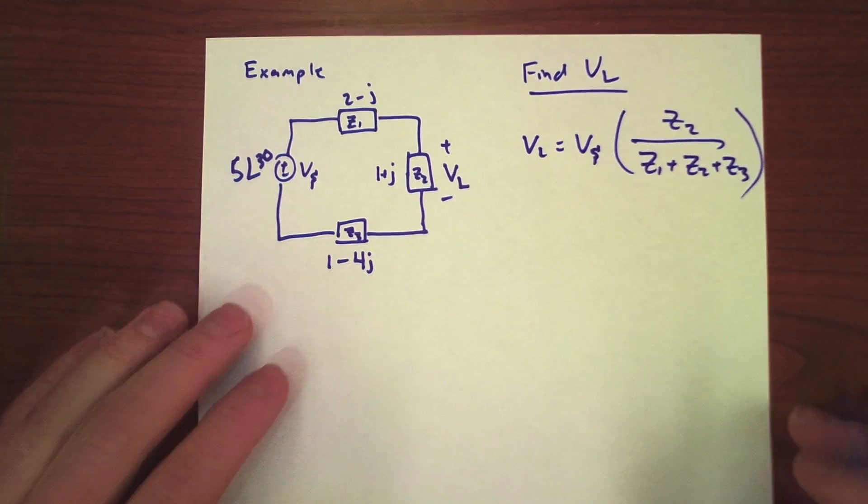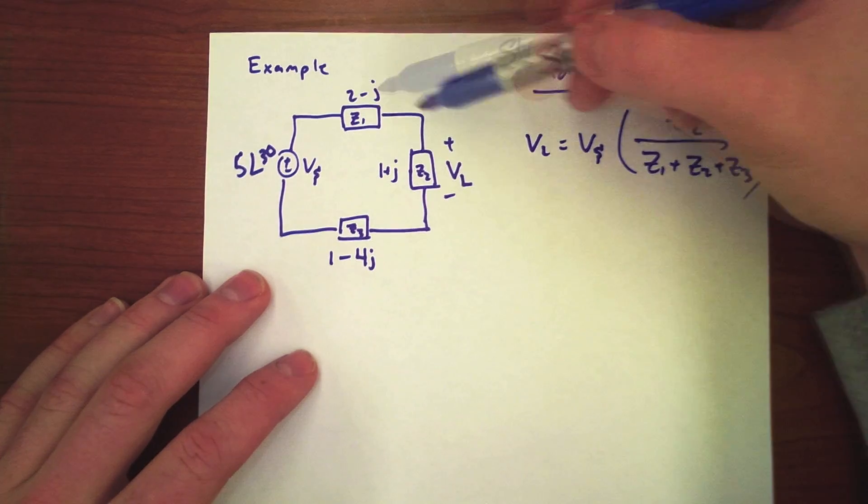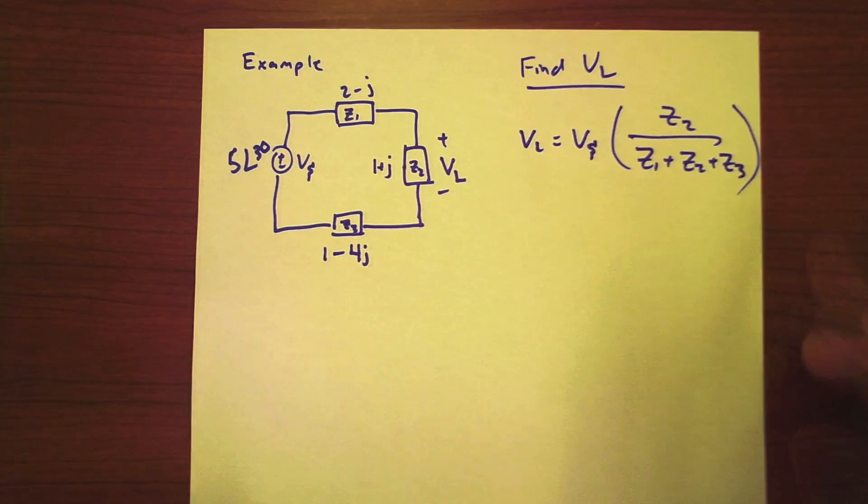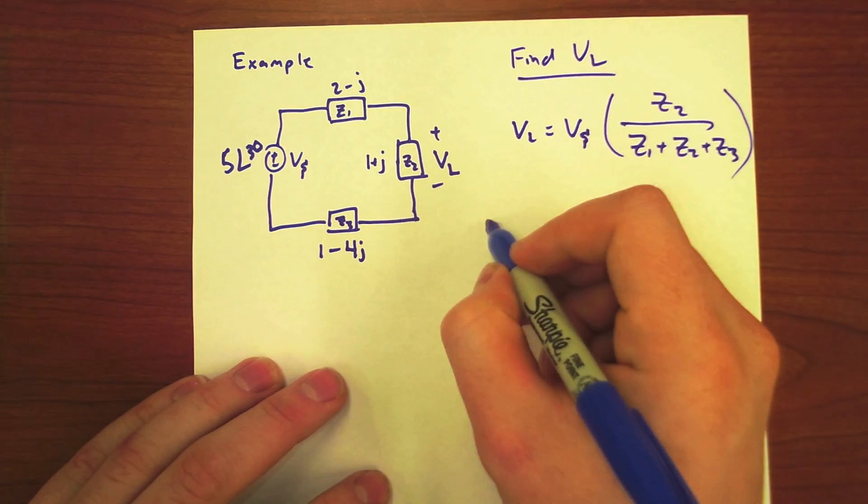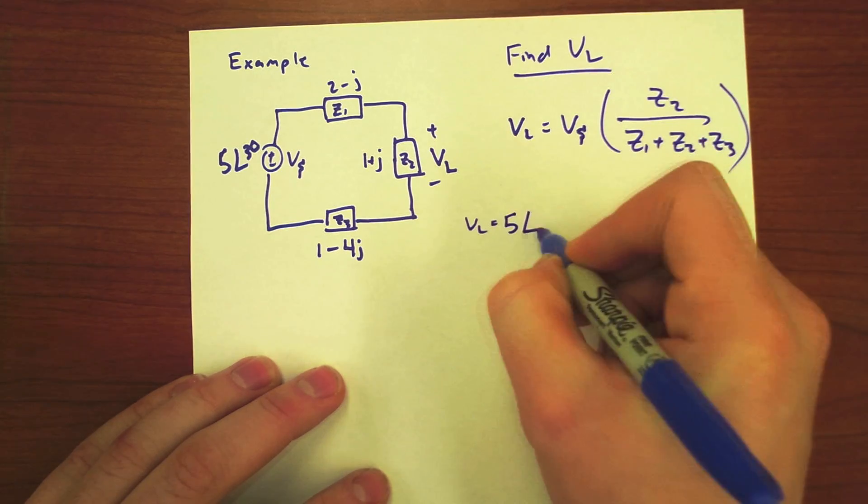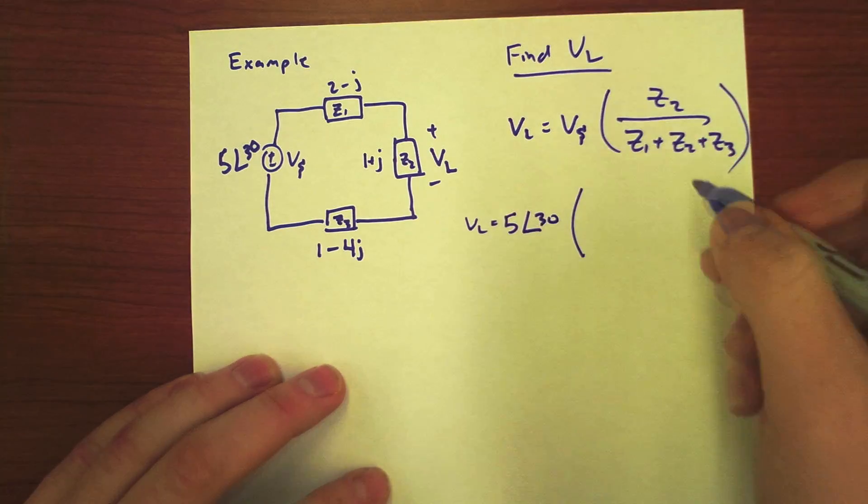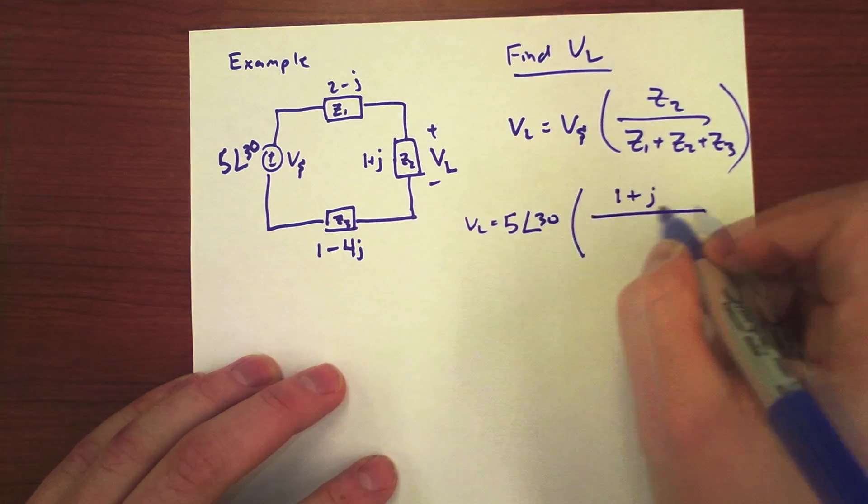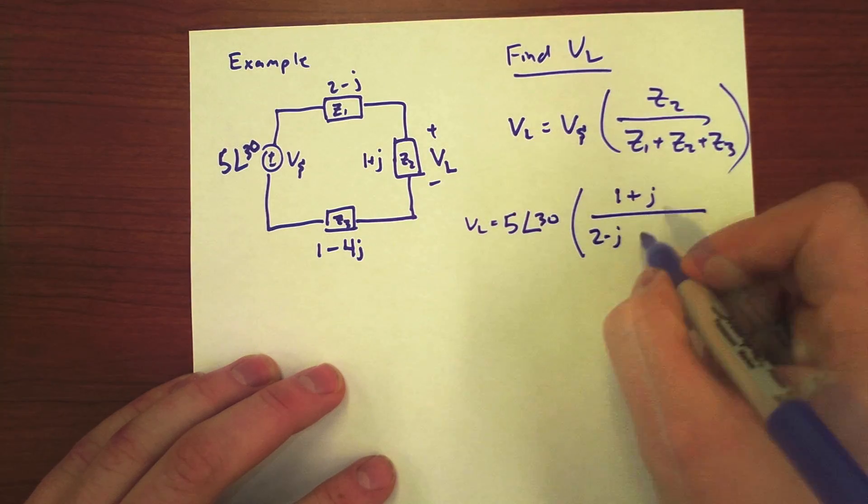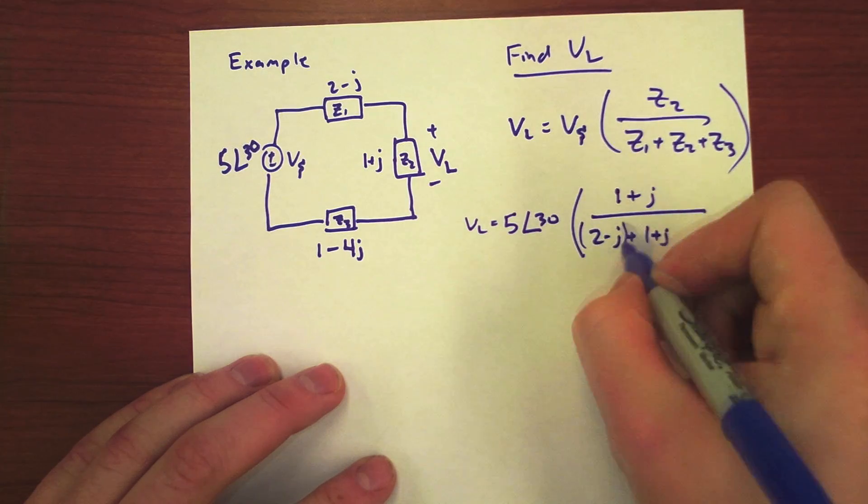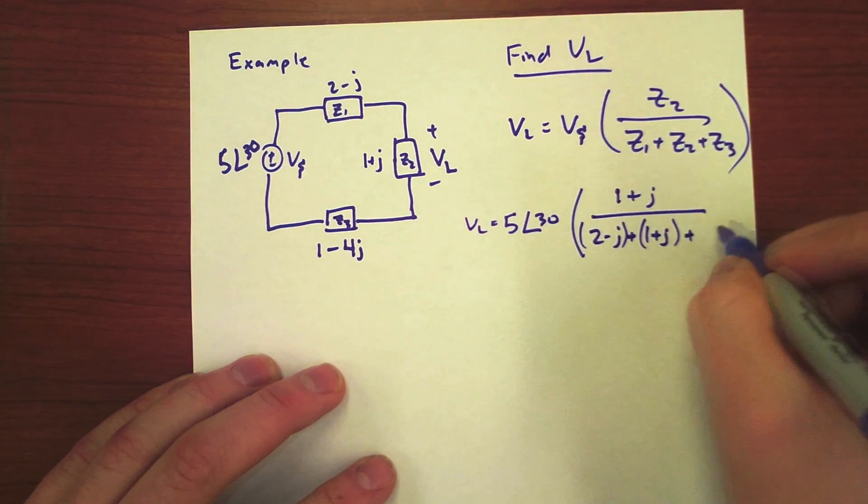And so, we can tell that we're going to want to keep these in our Cartesian a plus bj because we're adding. So, VL is equal to 5 angle 30 times 1 plus j over 2 minus j plus 1 plus j plus 1 minus 4j.